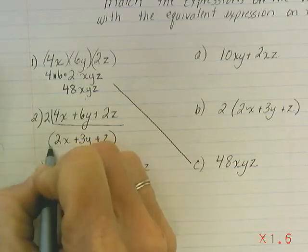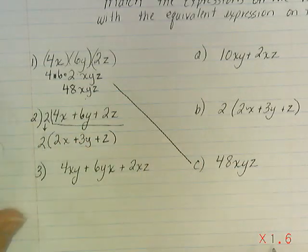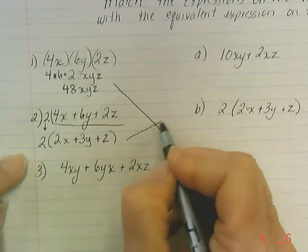That's what goes inside our parentheses, and this 2 comes in the front: 2 times (2x plus 3y plus z). I notice this answer is the same as choice B, so we're going to match those two up.